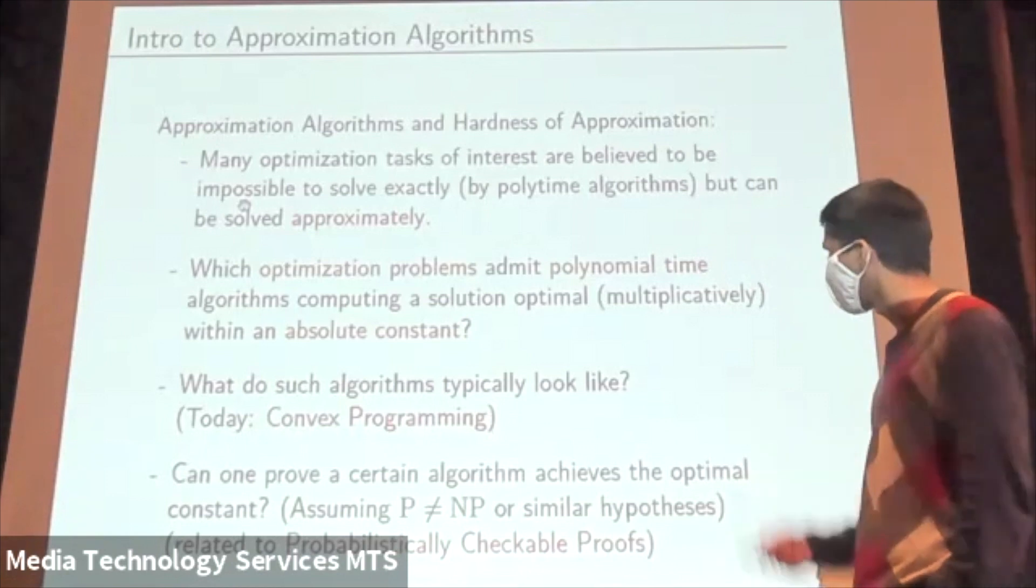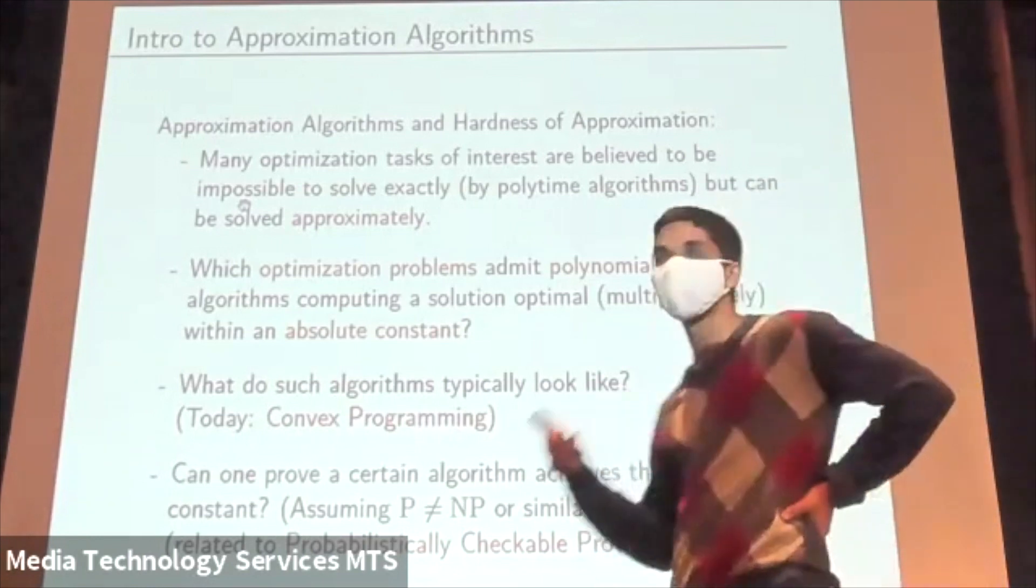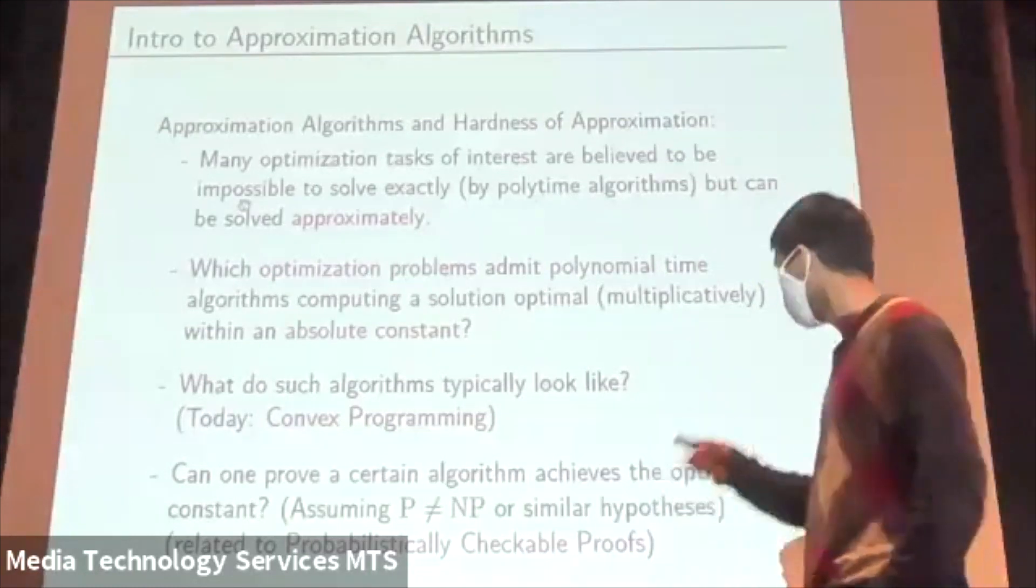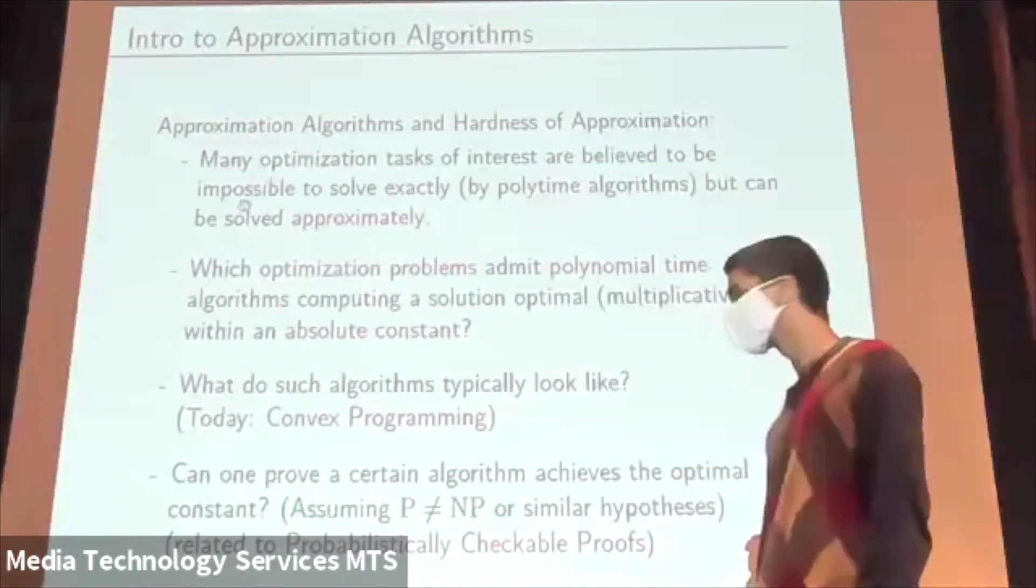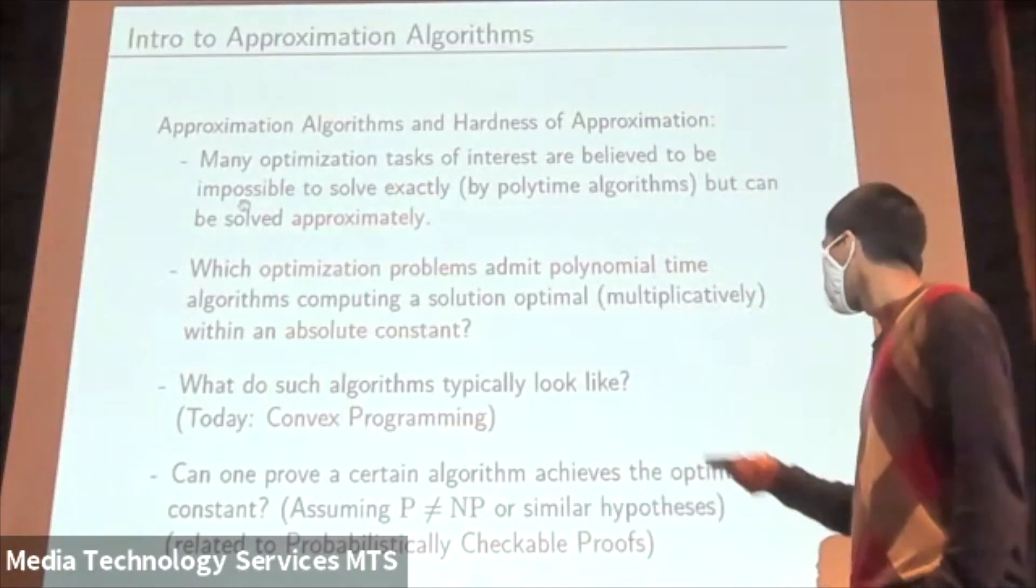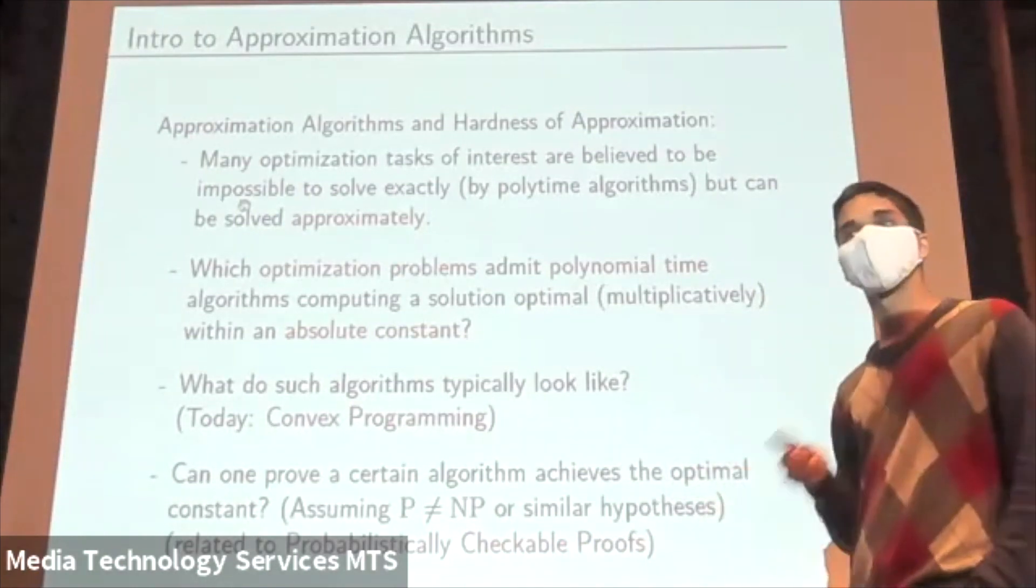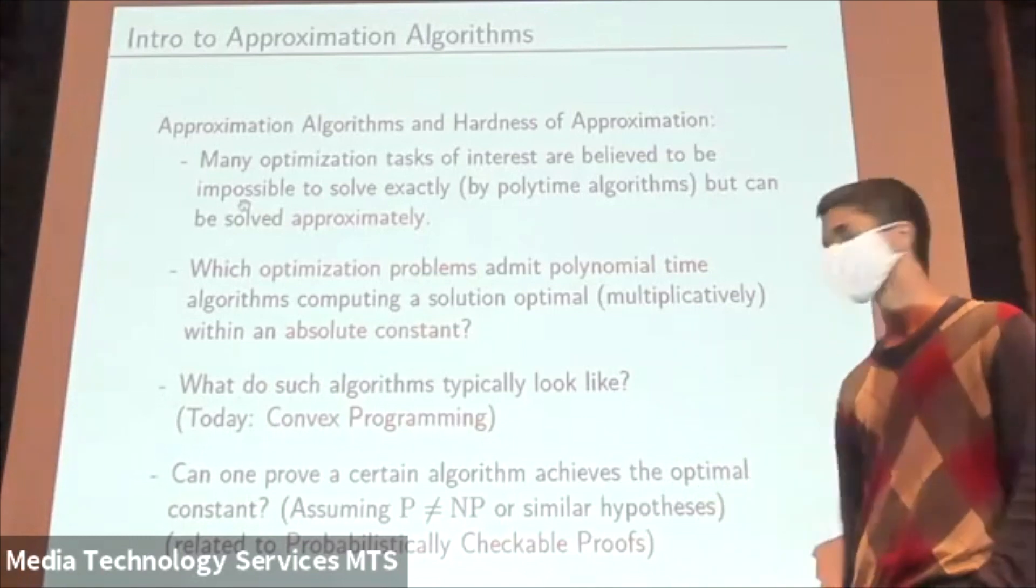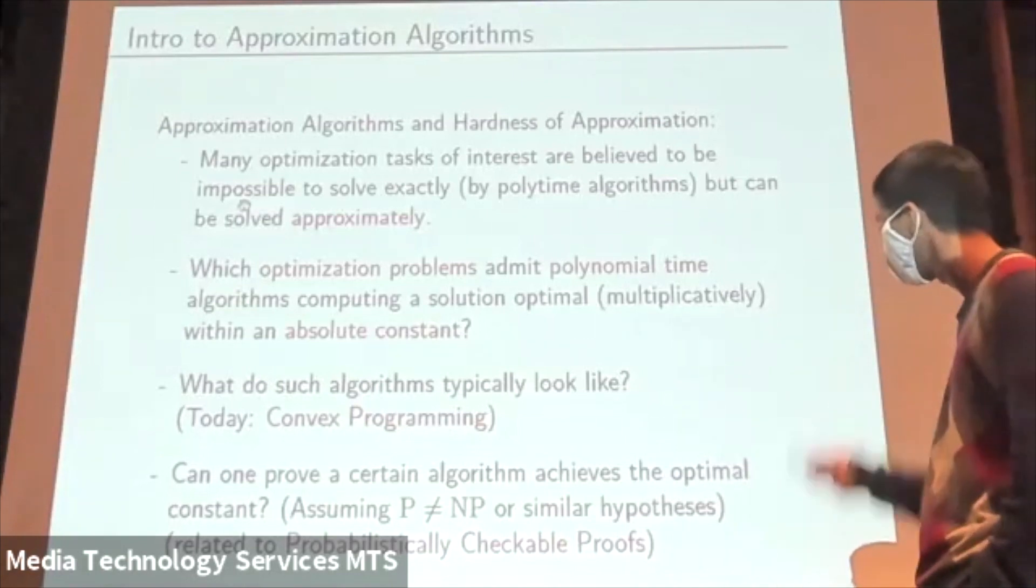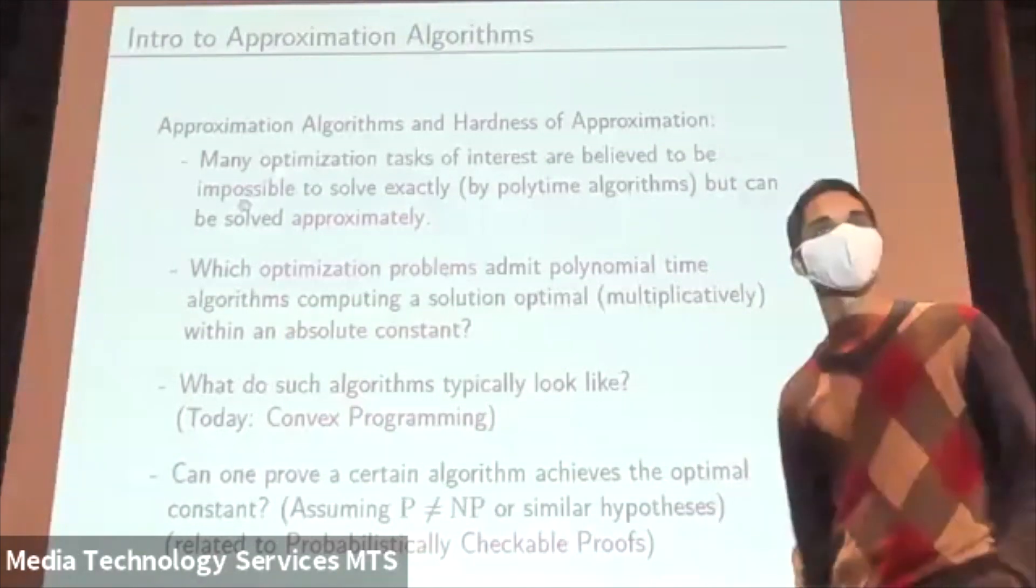Lastly, one of the questions we're interested in is, can one show that no other algorithm can improve on a certain algorithm's constant? Typically, we need to assume some complexity theoretic conjecture, because such statements imply P doesn't equal NP. One would look to prove, assuming P doesn't equal NP, is a certain algorithm achieving the optimal constant for a particular optimization problem. These statements are highly non-trivial, and the theory of probabilistically checkable proofs was actually developed to answer questions like this.